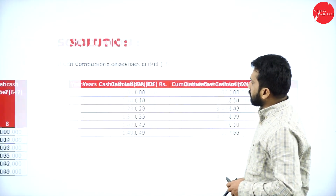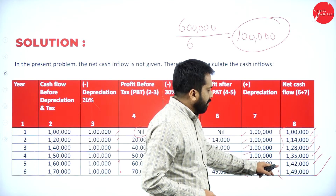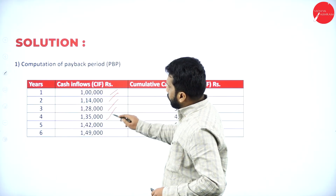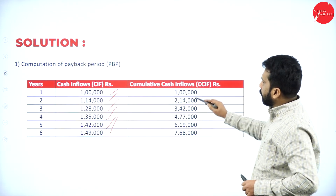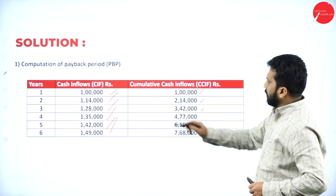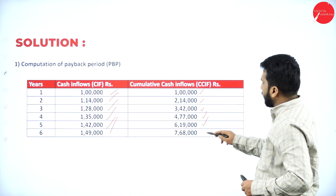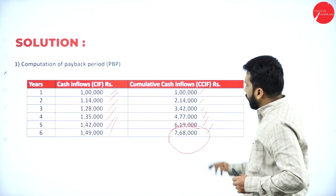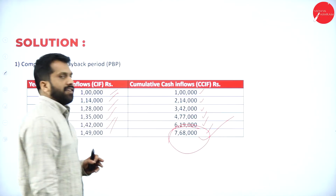Now we calculate cumulative cash flow. The net cash flows are one lakh, one lakh fourteen, one lakh twenty eight, one lakh thirty five, one lakh forty two, and one lakh forty nine thousand. Cumulative: year one is one lakh; year two is two lakh fourteen thousand; year three is three lakh forty two thousand; year four is four lakh seventy seven thousand; year five is six lakh nineteen thousand; year six is seven lakh sixty eight thousand.